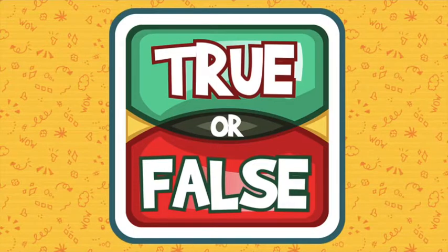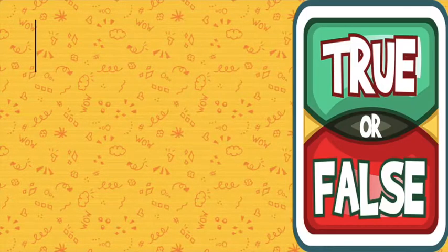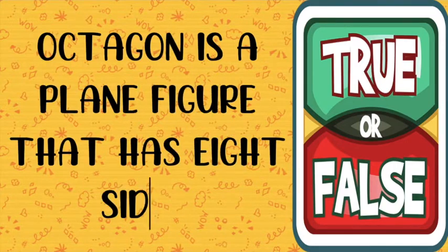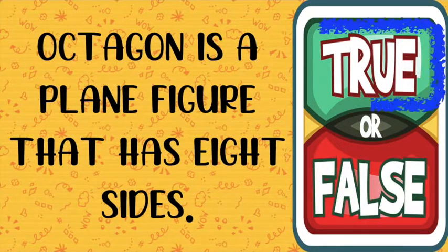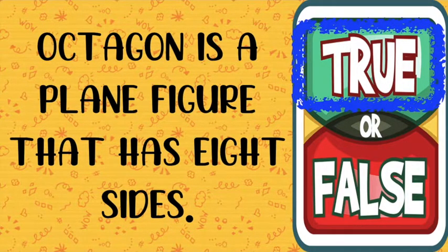So now, children, let's play a game — true or false. Let's have the first one. Octagon is a plain figure that has eight sides. Is it true or false? Very good, children! That is true. Always remember that octagon has eight sides.